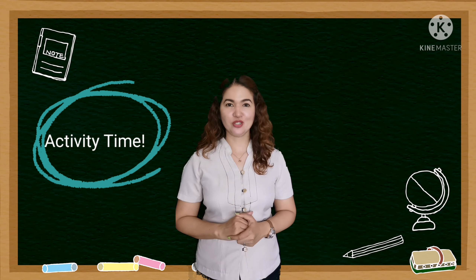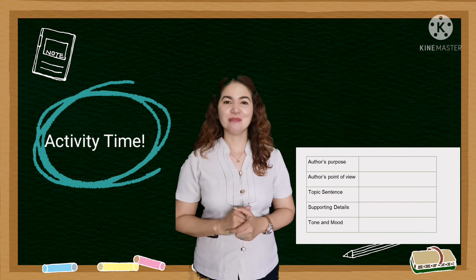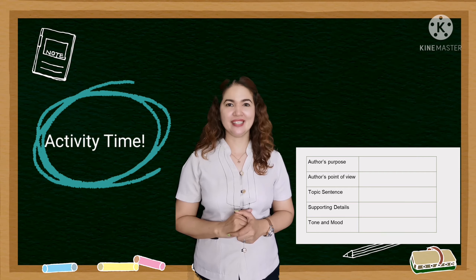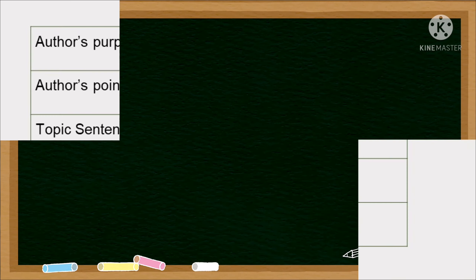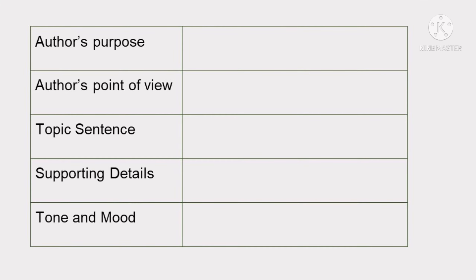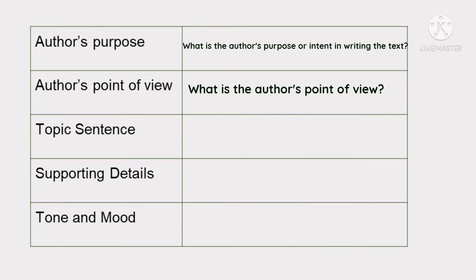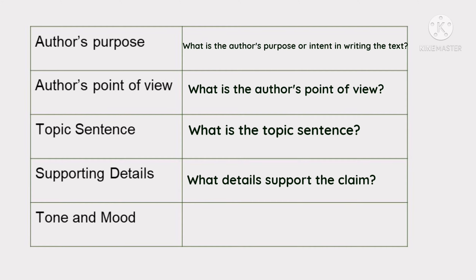Let us practice what you have learned today. Complete the table as we read the text. To help you answer the table, ask yourselves the following: What is the author's purpose or intent in writing the text? What is the author's point of view? What is the topic sentence? What details support the claim of the author? What is the tone and mood of the text?